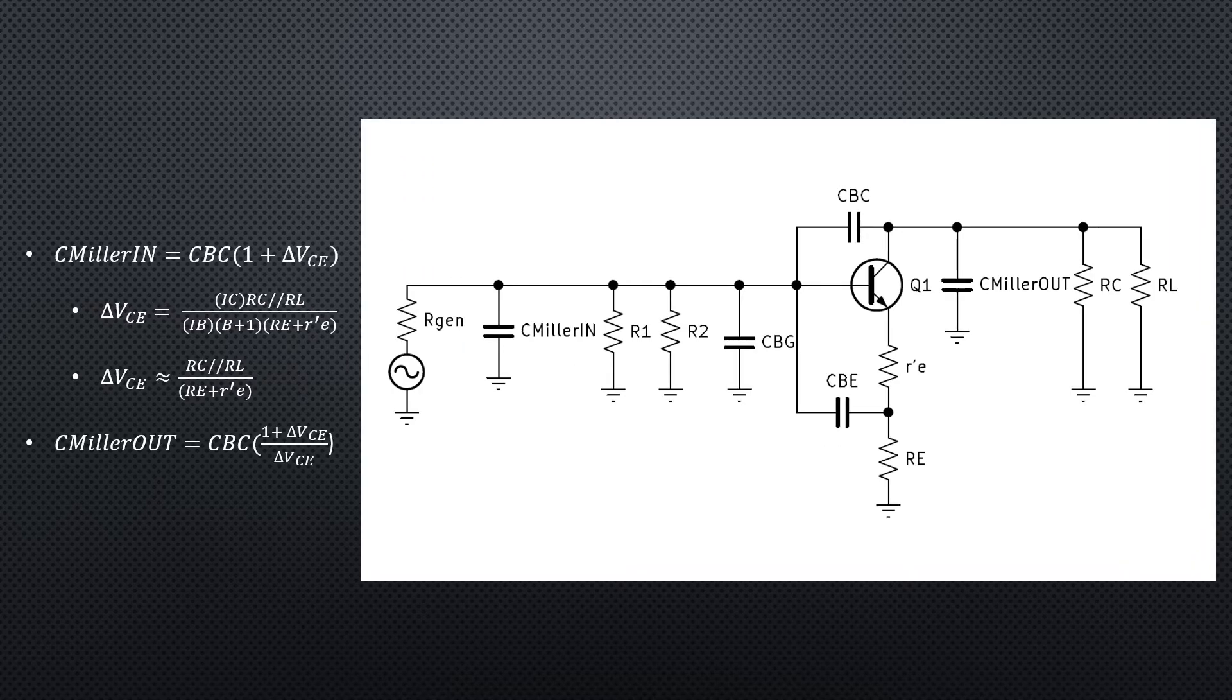Now we've got two capacitances to consider: C Miller in and C Miller out. C Miller in can be found by multiplying CBC by quantity 1 plus the gain of the amplifier in common emitter mode. C Miller out can be found by multiplying CBC by quantity 1 plus the gain common emitter divided by the gain common emitter.